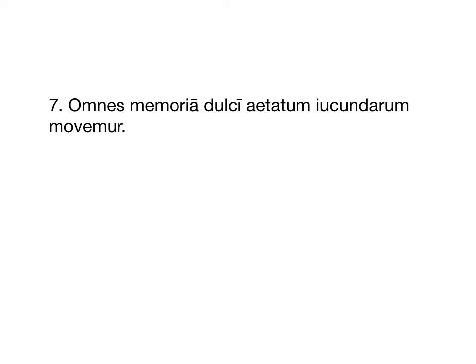Omnes, Memoria, Dulce, Aetatum, Iucundarum, Movemur. This is mostly a vocab kind of sentence in terms of what could give you difficulty. The Movemur is first person plural passive, which we haven't really translated yet. So Memoria and Dulce can both be ablative — looks like an ablative of means. Aetatum and Iucundarum are both genitive. Aetatum there is third declension plural genitive. And Movemur is first plural passive, so it's going to be we are verbed.